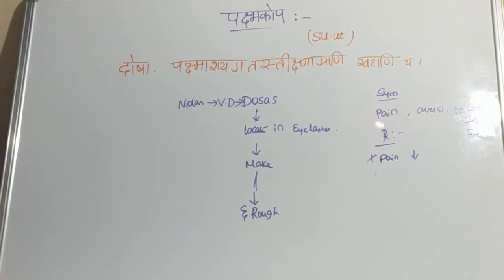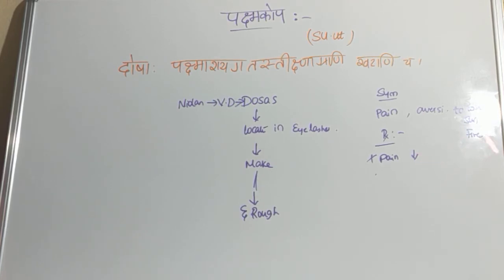Now moving on to the lakshana: the symptoms include pain (ruja) and aversion to wind, sun, and fire. The treatment involves removing the eyelashes, which will reduce the pain. This is the treatment of Pakshmakopa. It is correlated with trichiasis — you must add this point at the end of your answer.